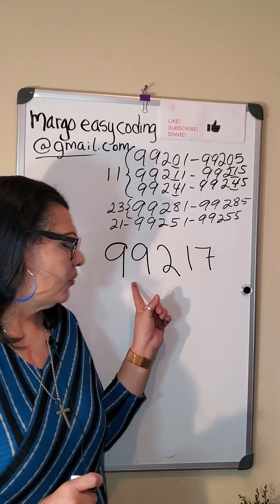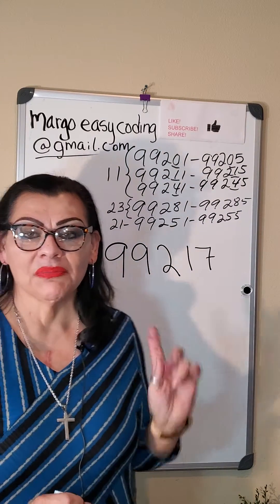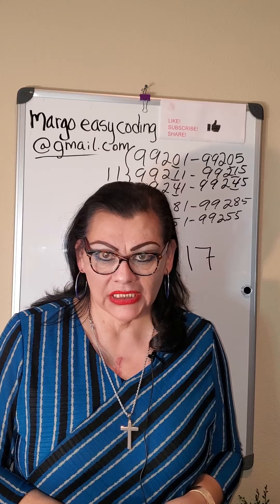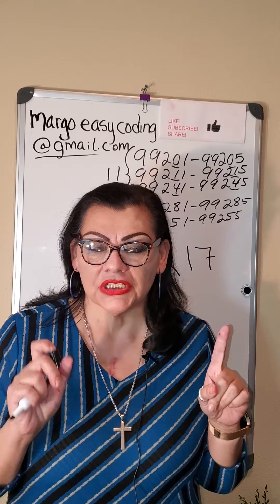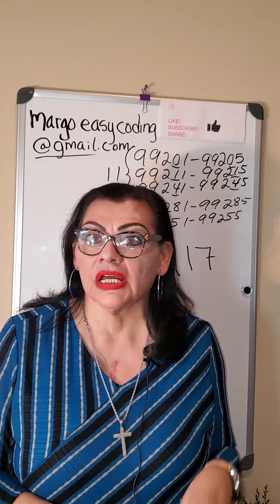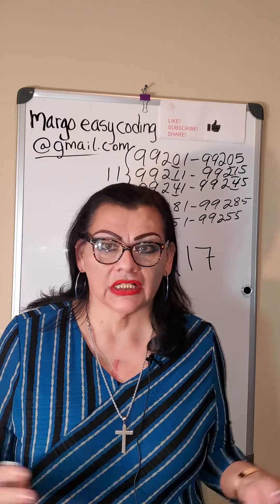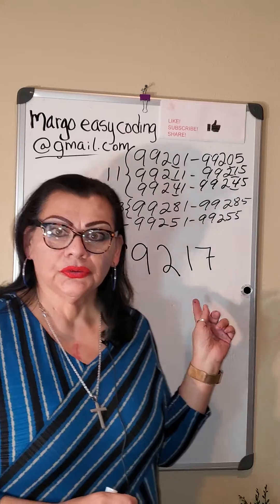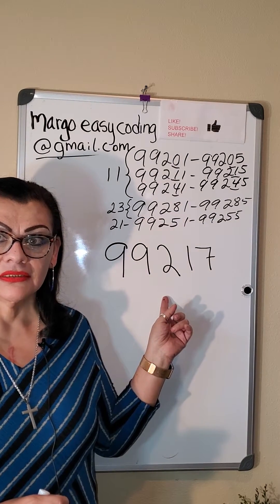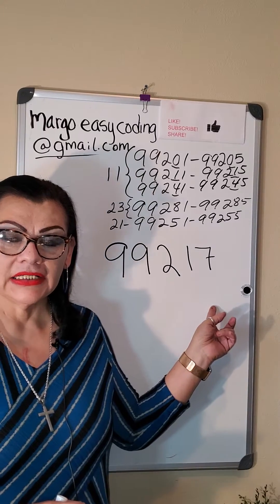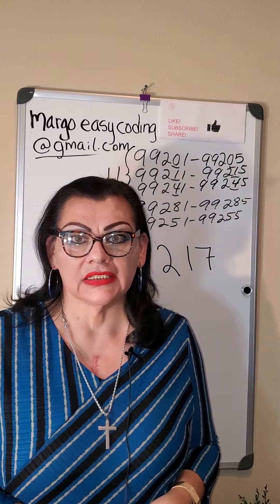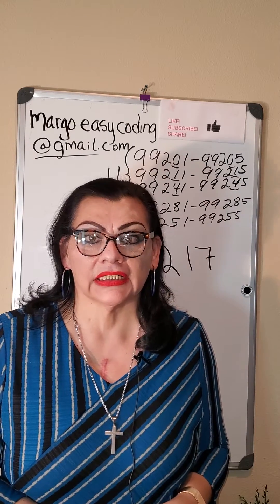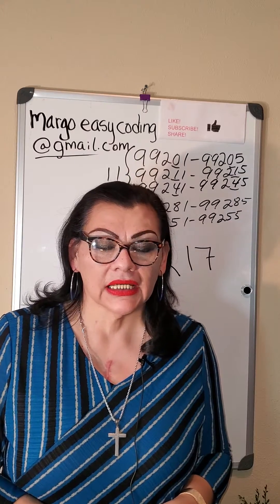What is 992? Remember, we are right now coding from the evaluation and management section — face-to-face, doctor and patient, or if the patient is a minor, doctor and patient and parents, or a guardian or an adult. So 992 means evaluation and management face-to-face, and in this case the last digits 1-7 tell you that this was a patient seen in the observation room who did not get admitted and is going to go home.